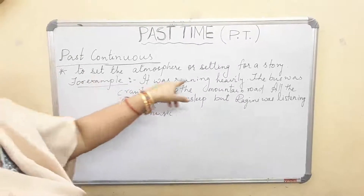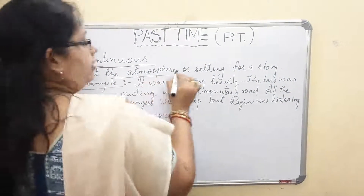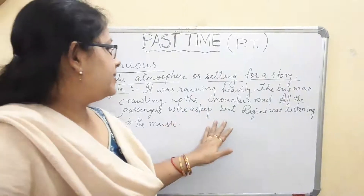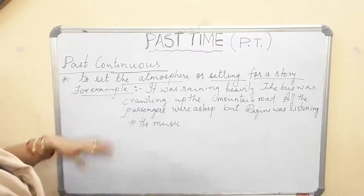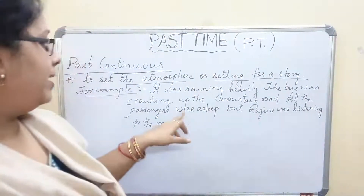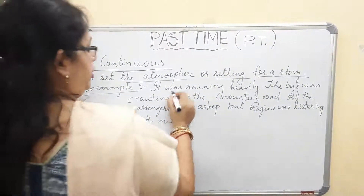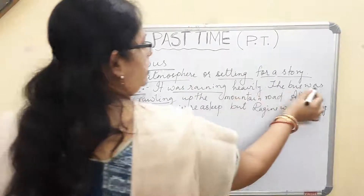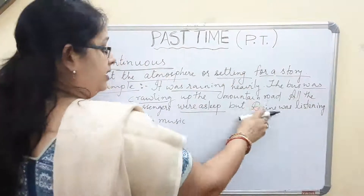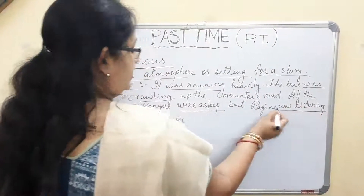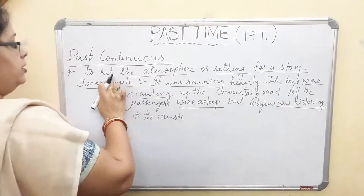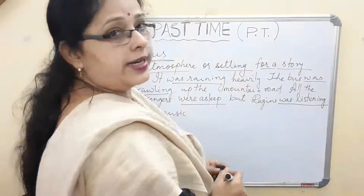The next use is to set the atmosphere or setting for a story. For example: 'It was raining heavily. The bus was crawling up the mountain road. All the passengers were asleep, but Ragini was listening to music.' Here, we use past continuous to show the background of the story — what was happening around Ragini. This entire setup creates the atmosphere for a story about Ragini.